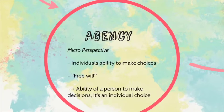For the micro perspective, we talk of agency. Agency is the individual's abilities to make choices in society that are not directed by anything but their own choices. It's what we call free will.